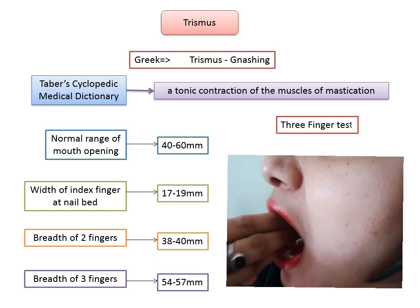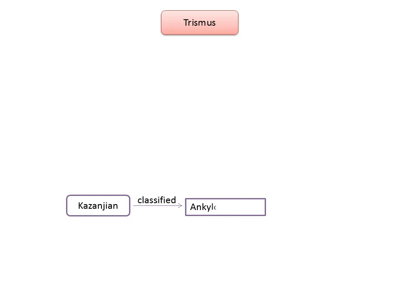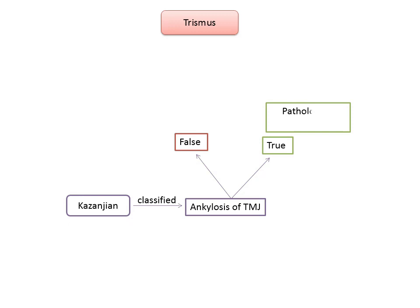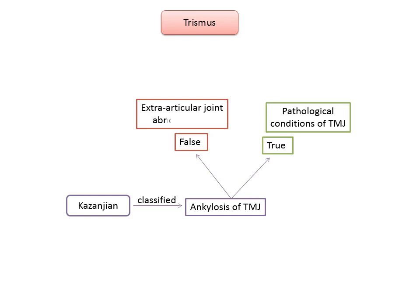Khazanjian divided ankylosis of the temporomandibular joint into true and false. The true type of ankylosis was attributed to pathological conditions of the joint, and false ankylosis was applied to restrictions of movement resulting from extra-articular joint abnormalities. This latter type of ankylosis is what most clinicians know as trismus.